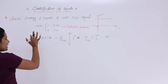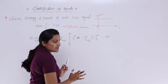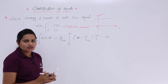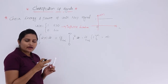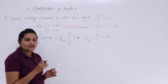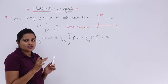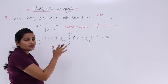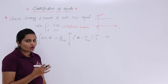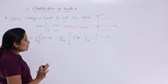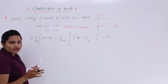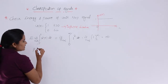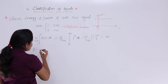Since the energy is infinite, this is not an energy signal. To become an energy signal, a signal must have finite energy. Since the unit step signal has infinite energy, it is definitely not an energy signal. Whenever a signal is not an energy signal, you need to calculate its power.